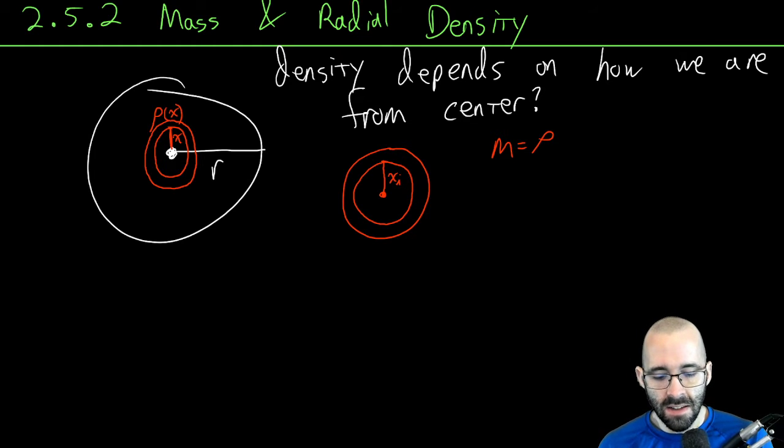We're dividing this into really tiny pieces so that on this little washer the density is basically constant. The mass here is just the density times the area. What's the area of this?